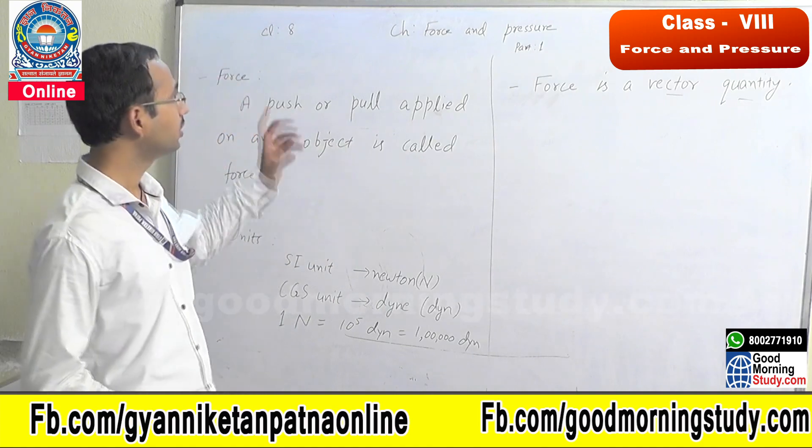Now let us discuss more about force. Force is a vector quantity. In physics we study different physical quantities — measurable quantities are known as physical quantities, and they are classified into two categories: vector quantity and scalar quantity. Scalar quantities have only magnitude, but vector quantities have magnitude as well as direction. So force has magnitude as well as direction; therefore it is a vector quantity.